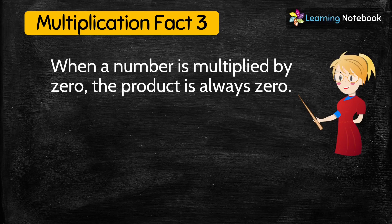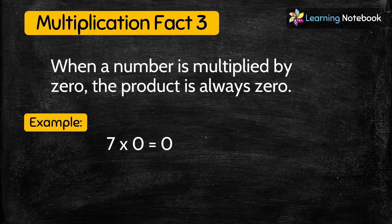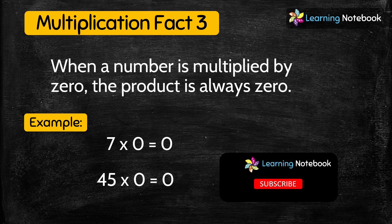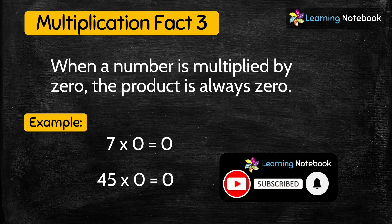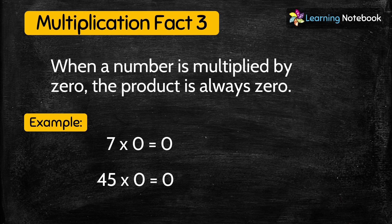Now let's see the last multiplication fact: when a number is multiplied by 0, the product is always 0. For example, if we multiply 7 by 0 we get 0. In the same way, if we take any other number like 45, 65, or 10 and multiply it by 0, we get the product as 0. So students, these are the 3 multiplication facts.